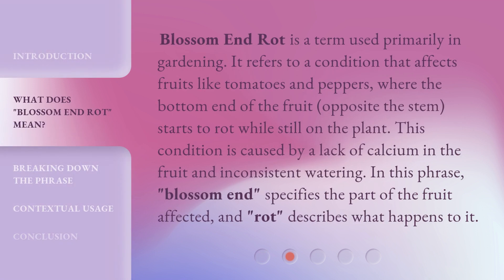Blossom and Rot is a term used primarily in gardening. It refers to a condition that affects fruits like tomatoes and peppers, where the bottom end of the fruit, opposite the stem, starts to rot while still on the plant. This condition is caused by a lack of calcium in the fruit and inconsistent watering. In this phrase, 'Blossom End' specifies the part of the fruit affected, and 'Rot' describes what happens to it.